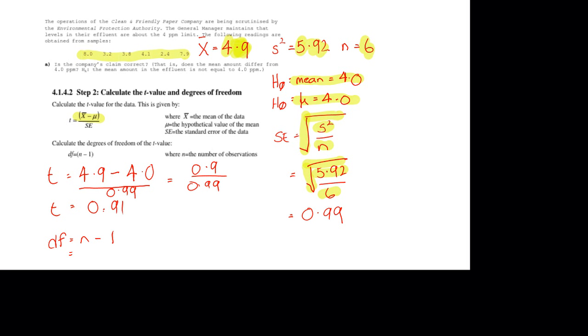Now we need degrees of freedom. They're calculated for this test as n minus 1, 6 minus 1, or 5. So we've calculated t, 0.91, df of 5.